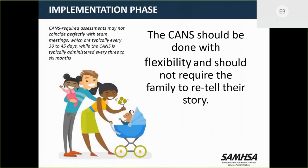If people know about those situations, they should tell us because we will talk to the powers that be to get that fixed — it's just a misunderstanding of the approach. Moving to the implementation phase: the CANS should be done with flexibility and should not require the family to retell their story. As John said — it's a measure of the story, not how you get the story. You don't have to ask a question to get the answer with the CANS. If you already have the answer, you've got the answer. You do want to circle back and make sure you're not misrepresenting families — this process is transparent and we don't want to communicate about people in a way they don't know about.